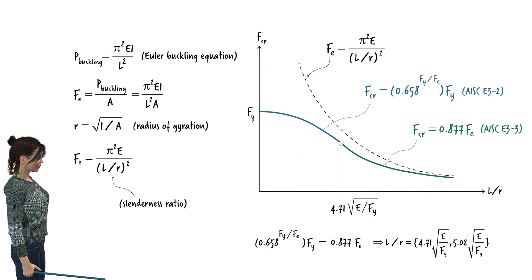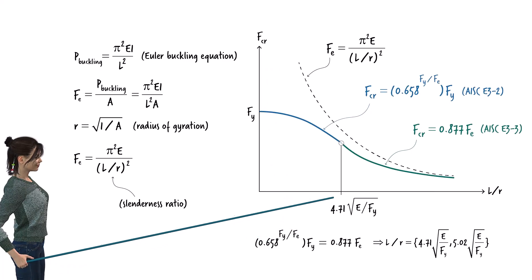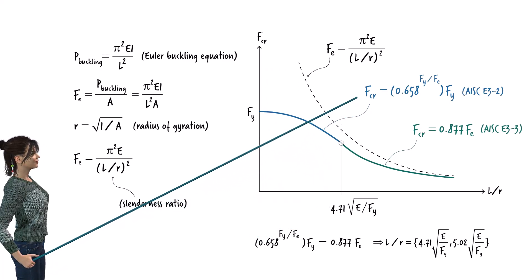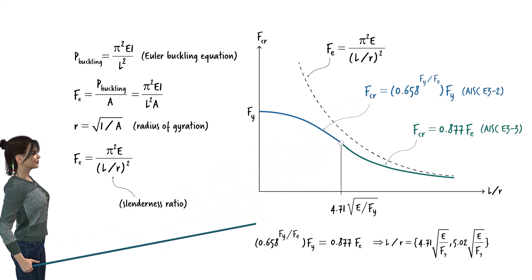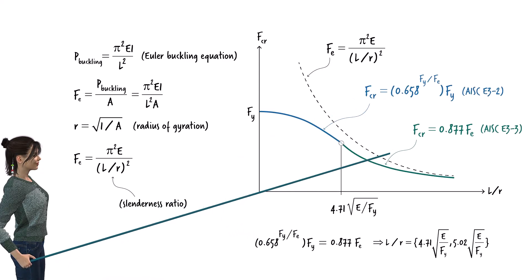So, if the slenderness ratio of the member is less than this value, we use this equation to determine the buckling strength of the member. Otherwise, the buckling strength needs to be calculated using this equation.